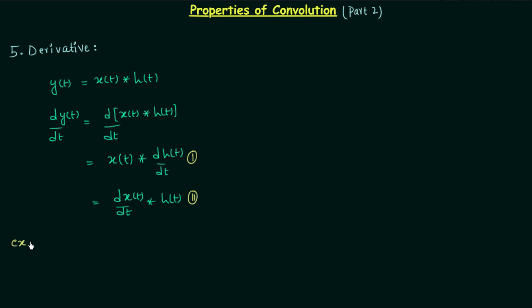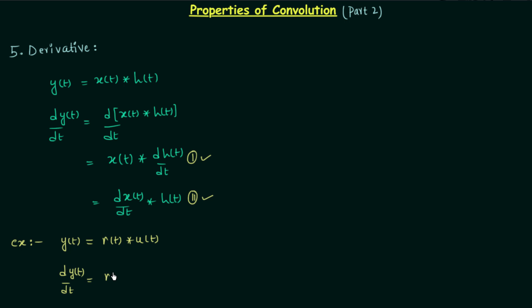Now we will solve one example to implement this property. In this example the output y(t) is equal to r(t) ⊛ u(t), where r(t) is the input to the LTI system and u(t) is the impulse response. We want dy(t)/dt and will calculate the answer using method 1 as well as method 2. Using method 1, we have r(t) convolved with du(t)/dt. The derivative of the unit step signal is equal to the unit impulse signal.